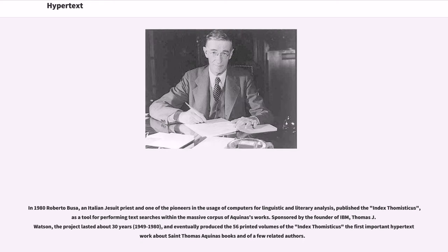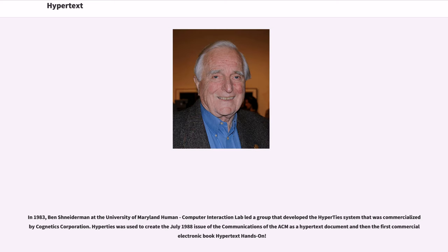In 1980, Roberto Busa, an Italian Jesuit priest and one of the pioneers in the usage of computers for linguistic and literary analysis, published the Index Thomisticus as a tool for performing text searches within the massive corpus of Aquinas' works. Sponsored by the founder of IBM, Thomas J. Watson, the project lasted about 30 years — 1949 to 1980 — and eventually produced 56 printed volumes of the Index Thomisticus, the first important hypertext work about St. Thomas Aquinas' books and a few related authors.